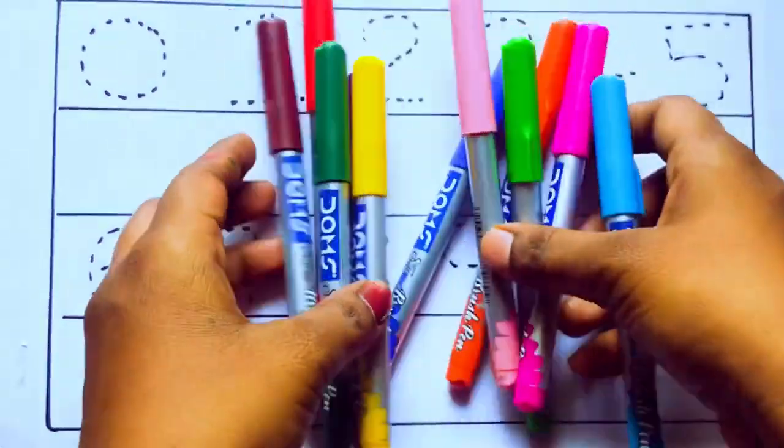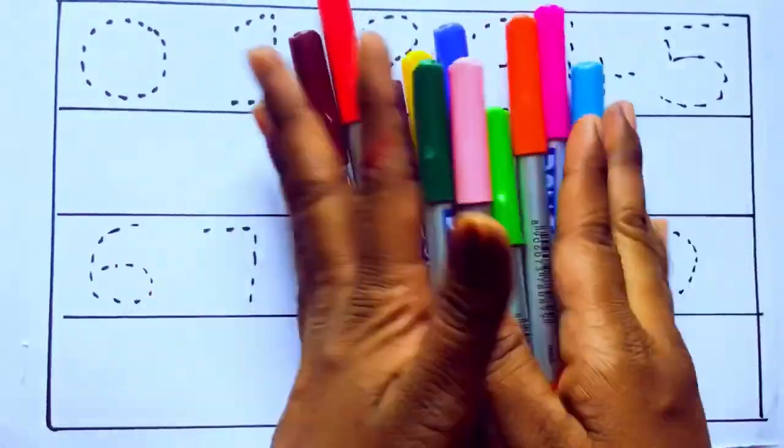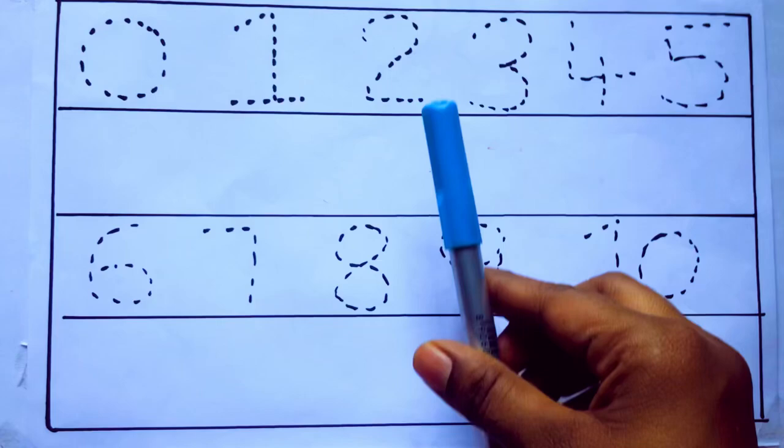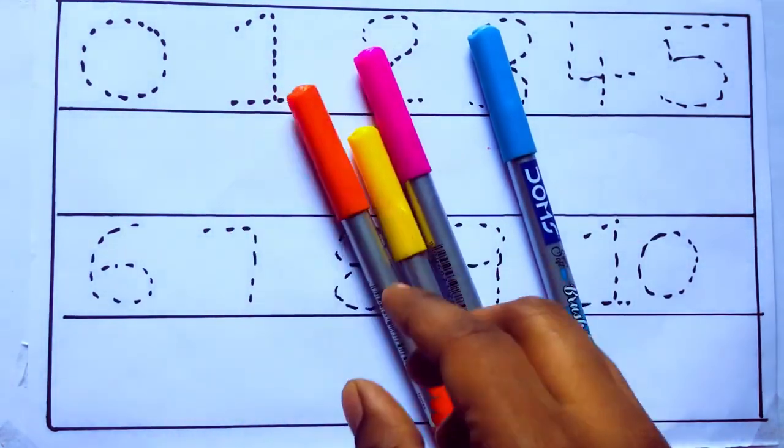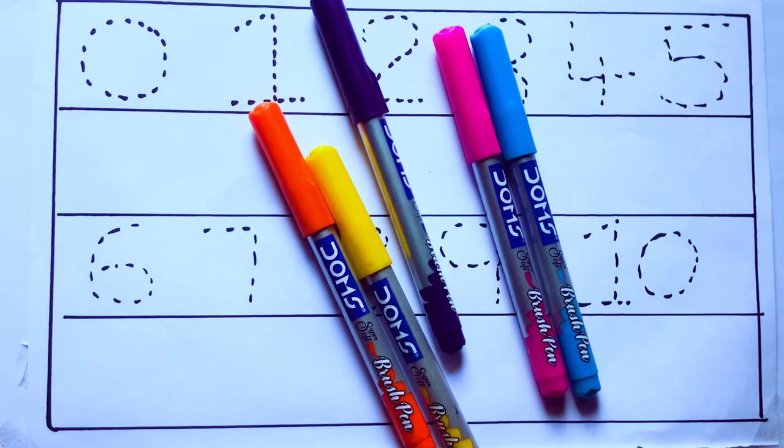Let's learn some colors. These are all the color pencils. Let's learn the names: sky blue color, pink color, yellow color, orange color, violet color.